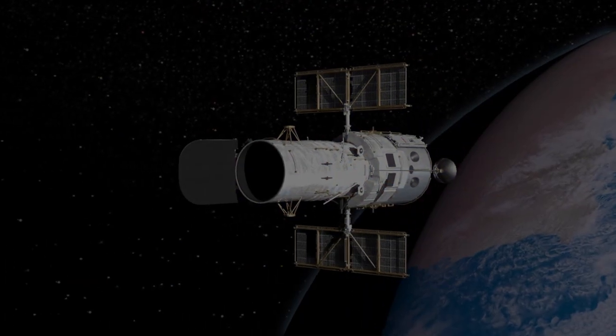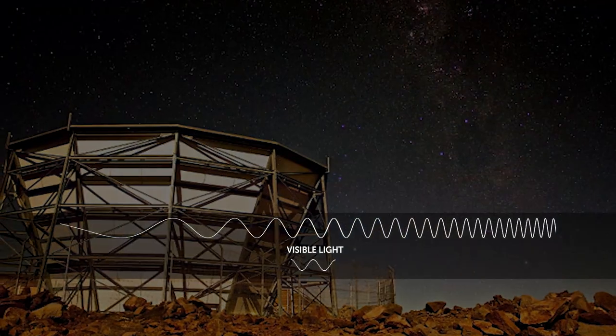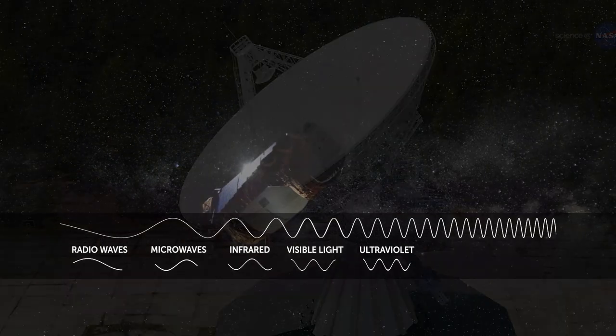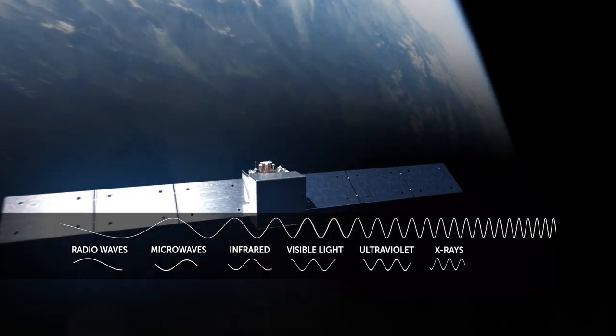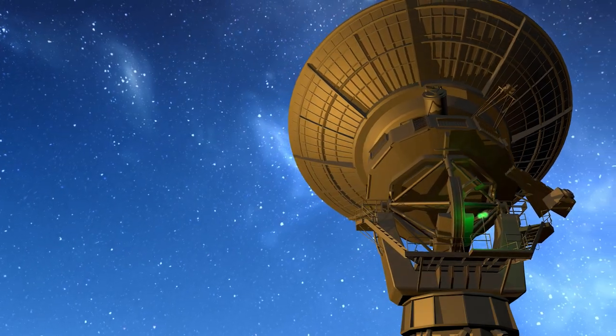Telescopes are designed to collect light beyond visible wavelengths: longer wavelengths like infrared, microwaves, and radio waves, or shorter wavelengths like ultraviolet, x-rays, and gamma rays. The wavelength of light collected dictates the telescope design.